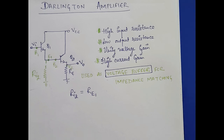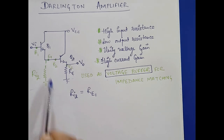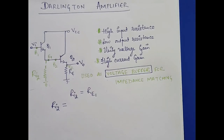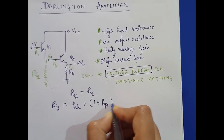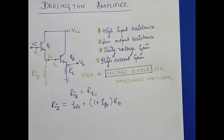One important point: I'm using direct formulas for common collector configuration AC analysis. I have derived those formulas in my previous video — please check out my video on common collector amplifier AC analysis. Here I am using the direct formula for input resistance for the Q2 transistor using the h-parameter model, which we have derived earlier.